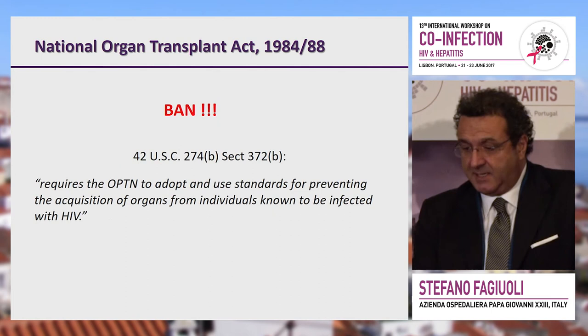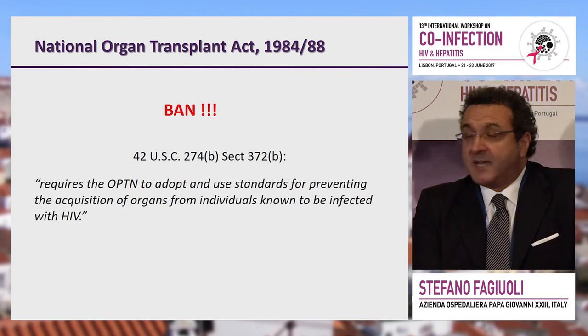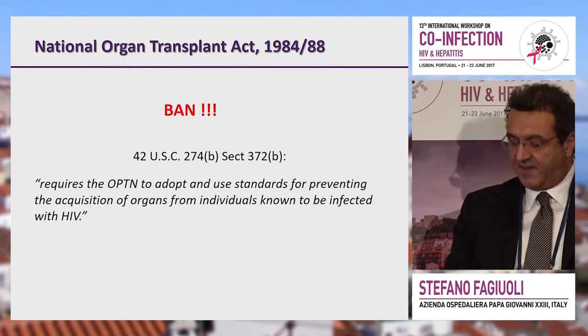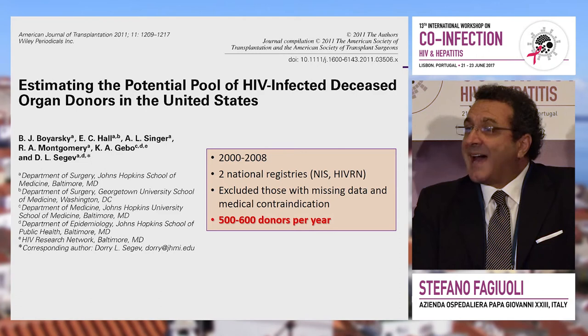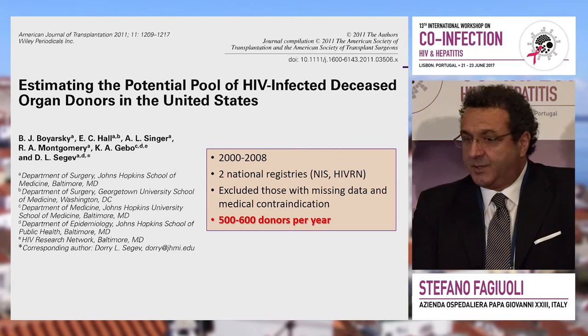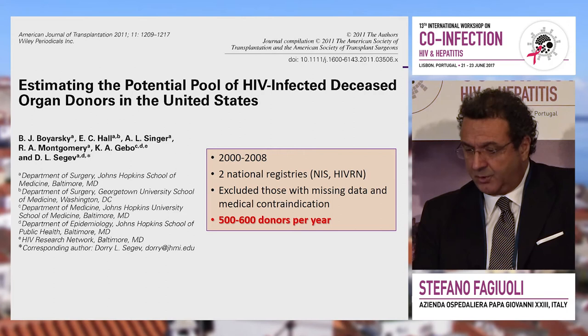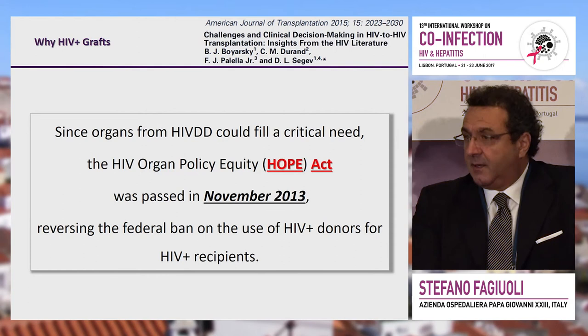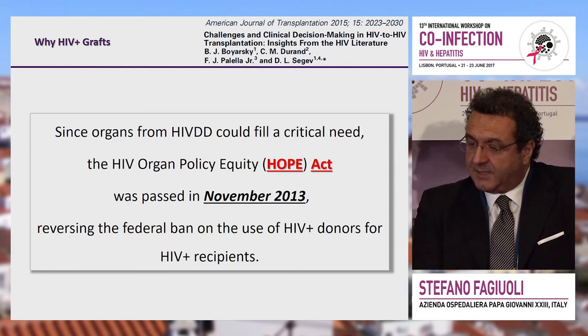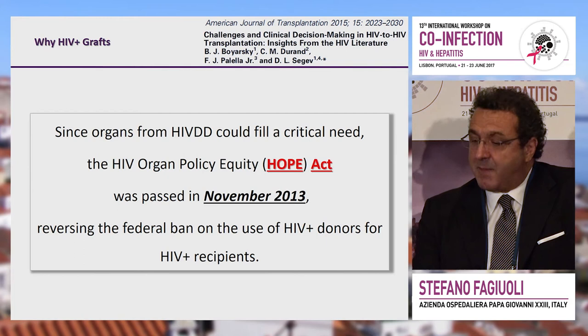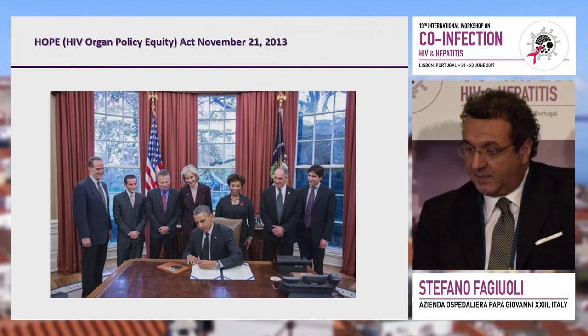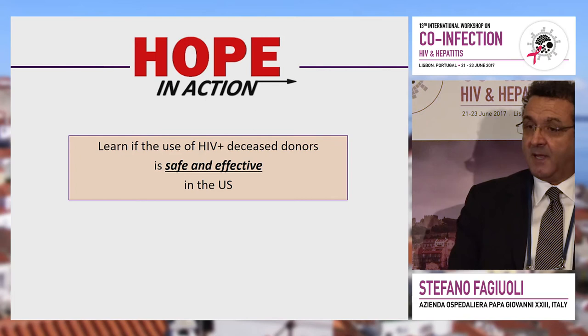In 1998, the United States raised a federal ban against the use of HIV positive organs. It was subsequently shown that up to 600 HIV positive organs could be used around the country — an important number to fight organ shortage. To address this, the HIV Organ Policy Equity (HOPE) Act was passed and signed on November 21, 2013, reversing the ban and permitting HIV positive donor organs in HIV positive recipients.